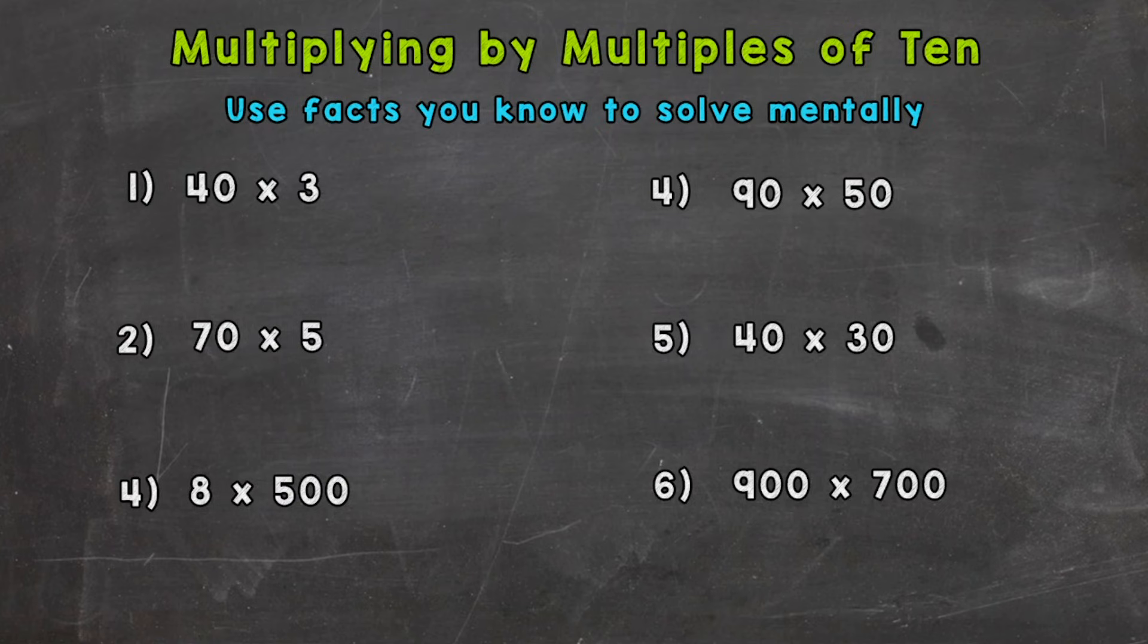So the multiples of 10 are all the numbers that 10 will multiply into, or if you were to count up by 10, all the numbers you'd hit: 10, 20, 30, 40, 50, and these go on forever. As you can notice on the six problems on your screen, the multiples of 10 end in zeros. It might be one zero, it might be two zeros, it might be three zeros, but we're going to use those zeros as part of the mental math strategy in solving these problems.